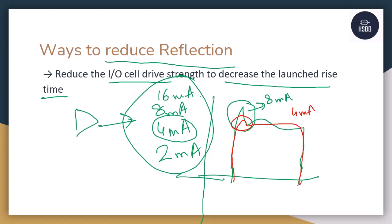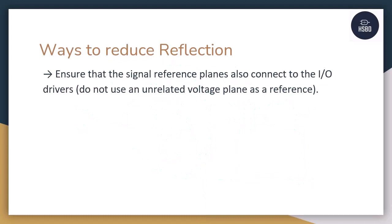This is one of the ways, but it should be the last option you use, because the software team working with you on the ASIC will need to change the drive strength via software — you do not have to do it manually.